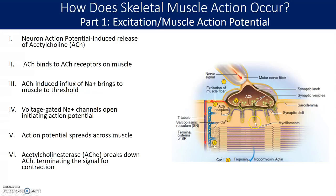Once enough sodium comes in, it changes the voltage where you have voltage-sensitive sodium channels. Once those sense the change in voltage — kind of like a threshold, similar to the threshold we discussed in the nerve — once it reaches that threshold, those sodium channels will open up, allowing a ton of sodium to flow in, causing an action potential. That action potential will spread all across the muscle cell membrane, the sarcolemma.